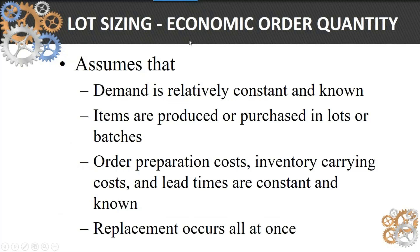Let's look at EOQ, or economic order quantity. EOQ assumes that demand is going to be relatively constant and known, so we know that that curve is going to be what we think it is. Items are produced and purchased in lots, and these costs — the preparation and inventory carrying costs — are constant and known.